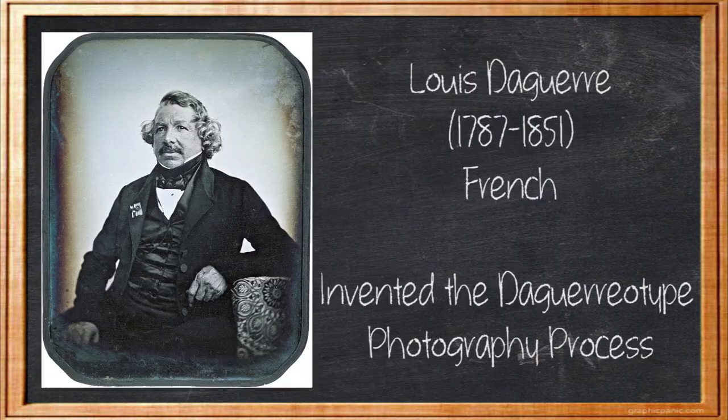Of course, nothing really came of this until his partner Louis Daguerre perfected the formula so that a photograph would only take 10 minutes of exposure time. Okay, maybe perfected is the wrong term, but he made the first photograph that wouldn't fade shortly after being taken, which was a milestone in and of itself.